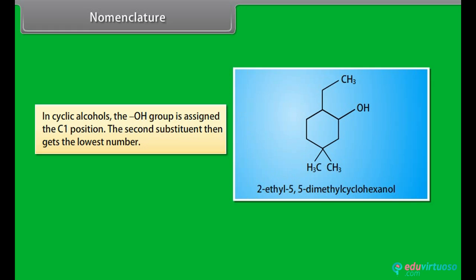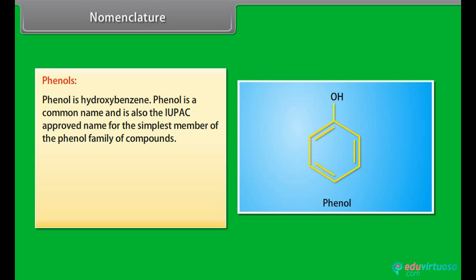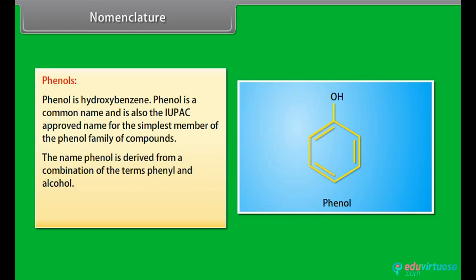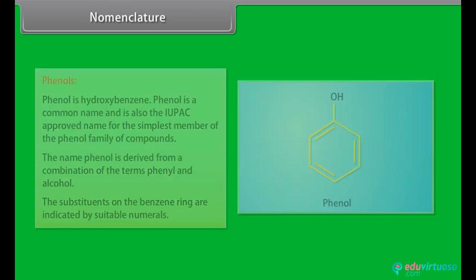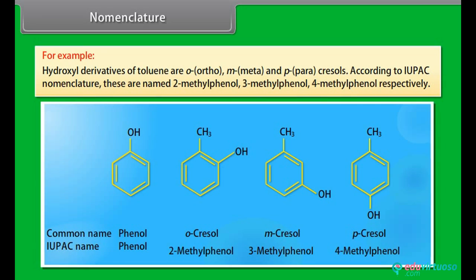In cyclic alcohols, the hydroxyl group is assigned the C1 position, and the second substituent then gets the lowest number. For example: 2-ethyl-5,5-dimethylcyclohexanol. Nomenclature — Phenols. Phenol is hydroxybenzene. Phenol is a common name and is also the IUPAC approved name for the simplest member of the phenol family. The name phenol is derived from a combination of the terms phenyl and alcohol. The substituents on the benzene ring are indicated by suitable numerals. For example, hydroxyl derivatives of toluene are ortho-, meta- and para-cresols. According to IUPAC nomenclature, these are named 2-methylphenol, 3-methylphenol and 4-methylphenol respectively.